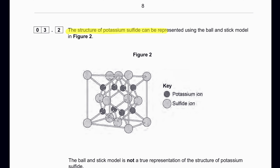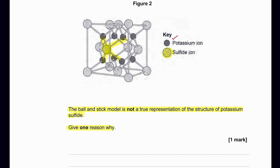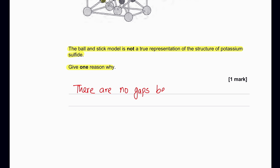The structure of potassium sulfide can be represented using the ball and stick model as shown in figure 2. The sulfide ion is represented slightly larger than the potassium ion. However, the ball and stick model is not a true representation of the structure. The answer is: there are no gaps between the potassium ions and the sulfide ions in the real structure.